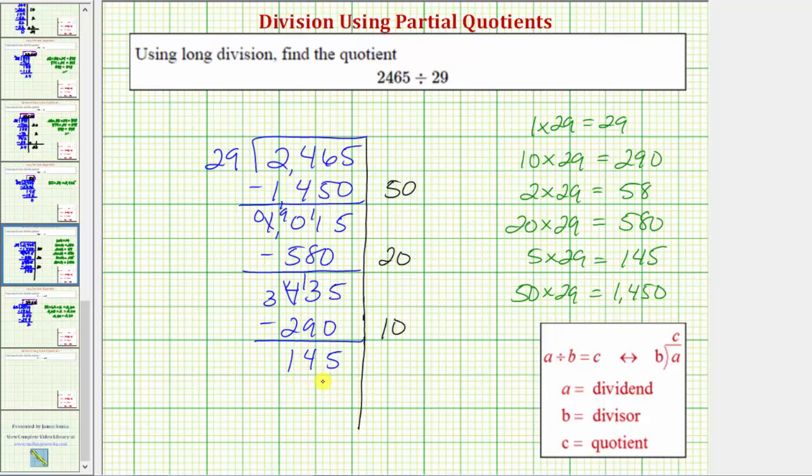We need to determine a certain number of 29s that we know for sure are in 145. But looking at our products, notice 5 times 29 equals 145. And therefore we know there's 5 29s in 145. So the next partial quotient will be 5. Again, 5 times 29 is 145. And we subtract.